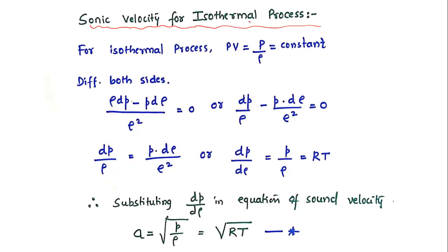For the sonic velocity in an isothermal process: using pV = constant, where V = 1/ρ, differentiating gives ρ·dp − p·dρ divided by ρ² equals zero. Solving, dp/dρ equals p/ρ equals RT. Substituting into the general equation, we get A equals square root of RT. We use this equation to evaluate the velocity of sound when the process is isothermal.